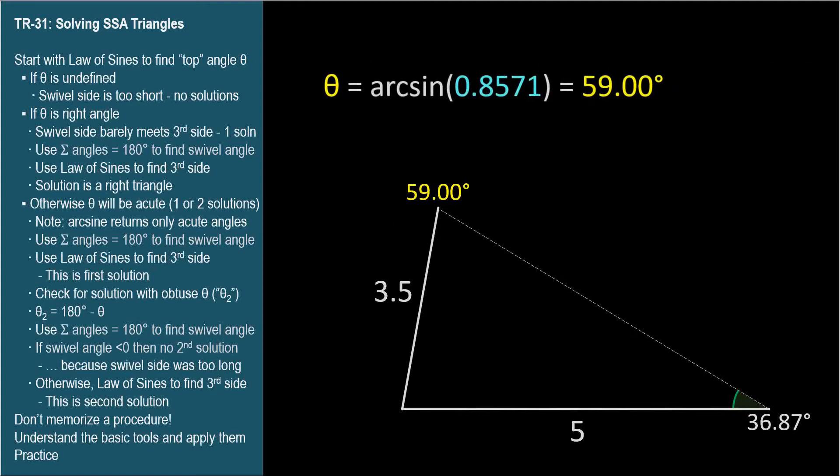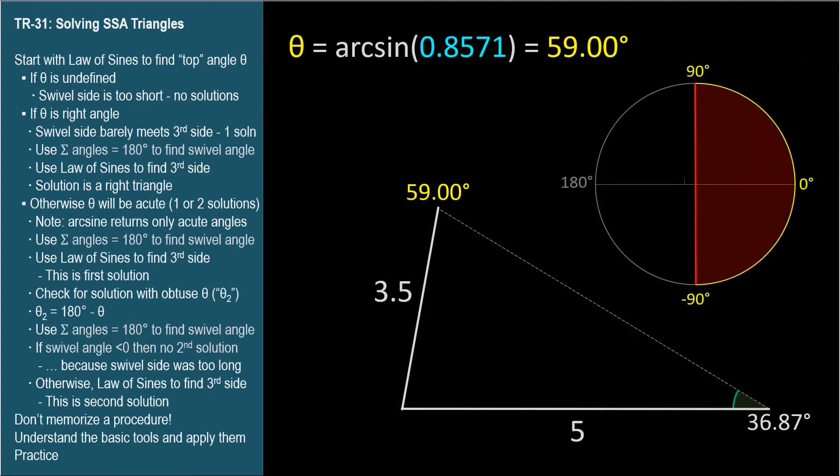The arc sine function returns an angle in the red range from negative 90 degrees to 90 degrees. Its range is constrained to meet the criteria of a function. See TR-23 for a review.